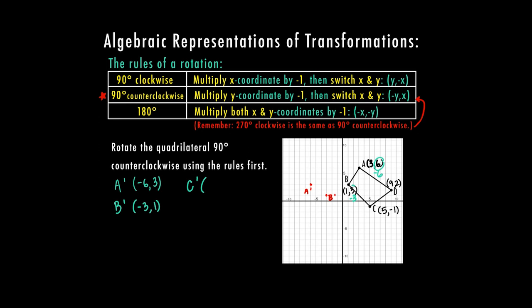C prime: multiply y times negative 1 — the -1 turns into positive 1, then switch places — C prime is (1, 5). D prime: y times negative 1 gives -2, then switch — D prime is (-2, 9). I graph that at (-2, 9). There's my D prime.